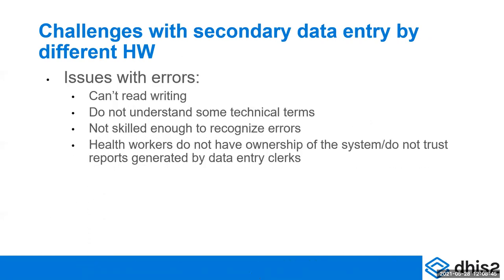We have some challenges with secondary data entry by a different health worker. You can have issues with errors — the person can't read the writing. They usually are not clinical staff, so they don't understand some of the technical terms. And sometimes they are not skilled enough to recognize errors. Somebody's handwriting may make the blood pressure look like four digits, and the data clerk will not recognize it and just put in four digits. And if you don't have a built-in program rule that detects the correct range of blood pressure, that error is going to go in.